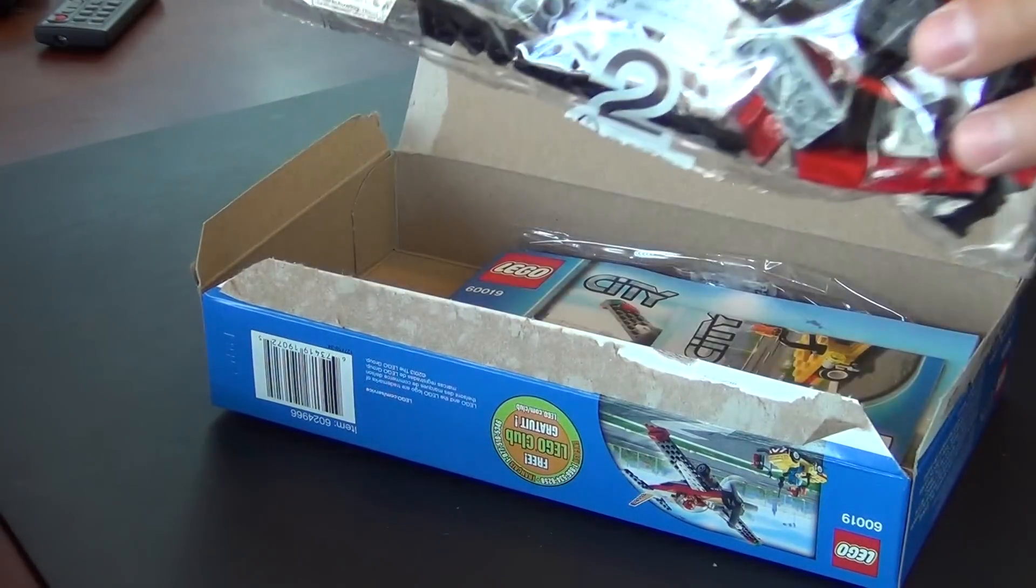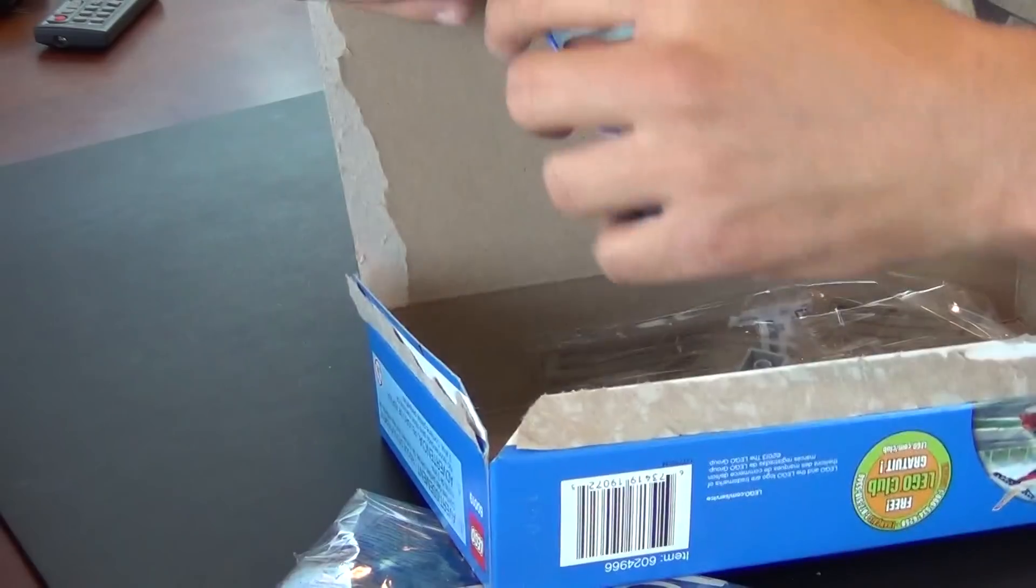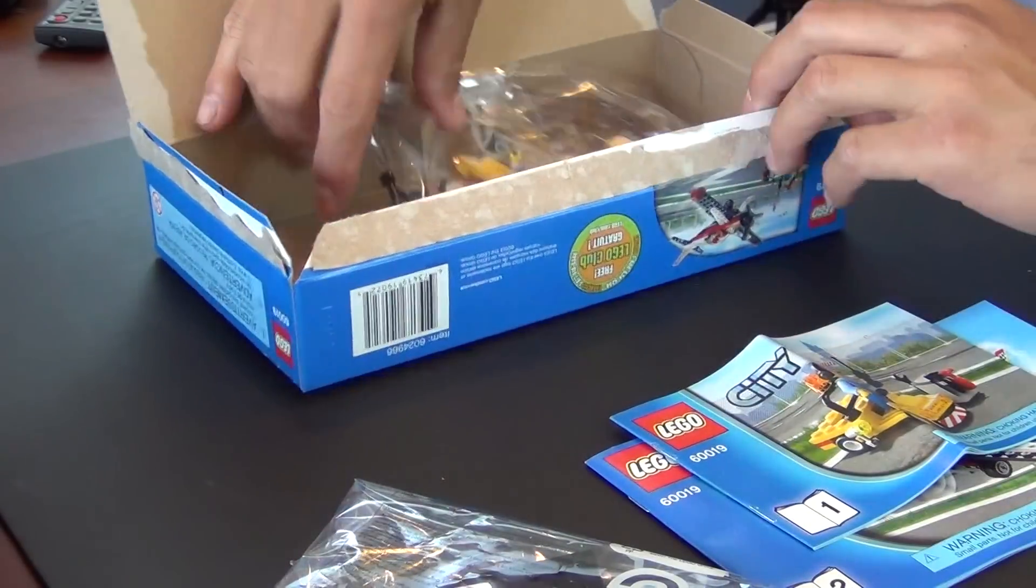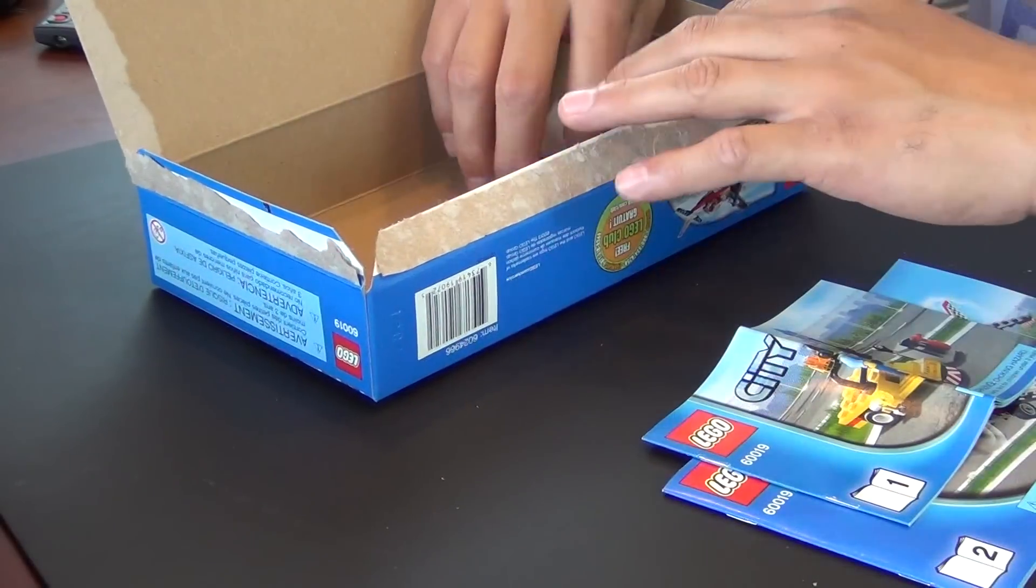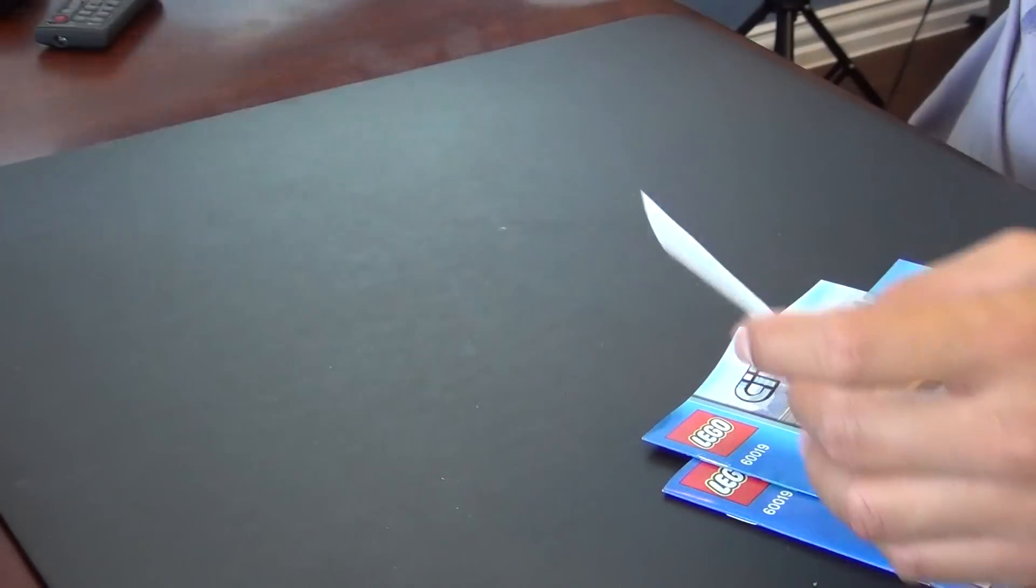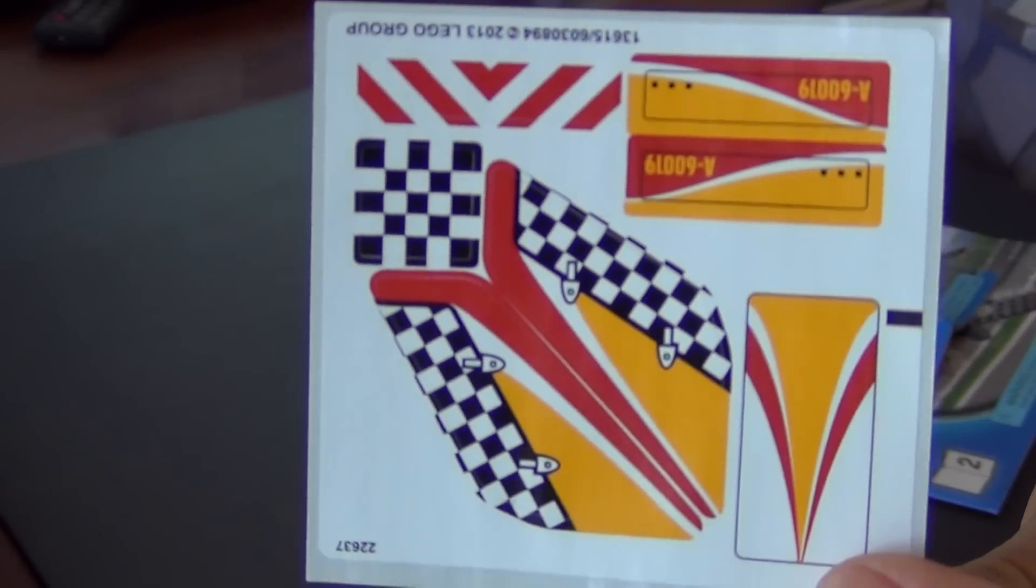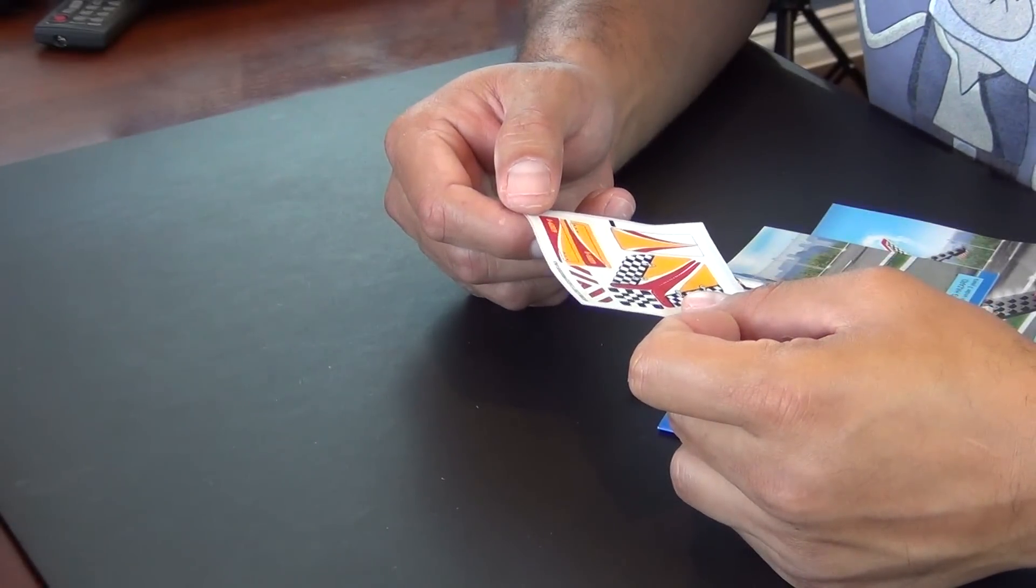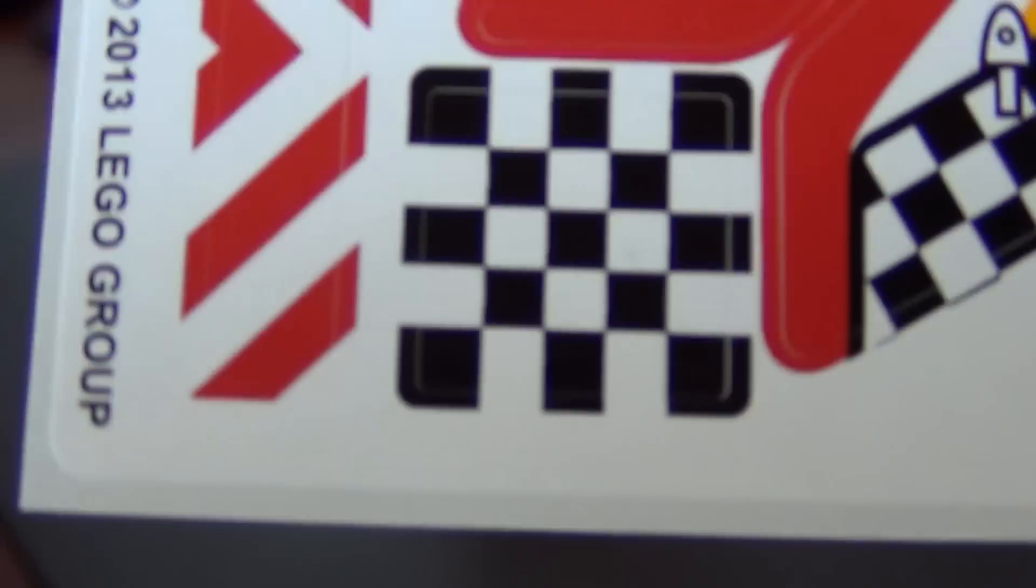140 pieces and we have numbered bags, and two instruction books. That's kind of crazy. There's bag one with probably about 20 pieces in bag number one. And a dreaded sticker sheet. The stickers aren't bad, but I don't think they need them. I think the only cool one I like on there is that checkered flag sticker.